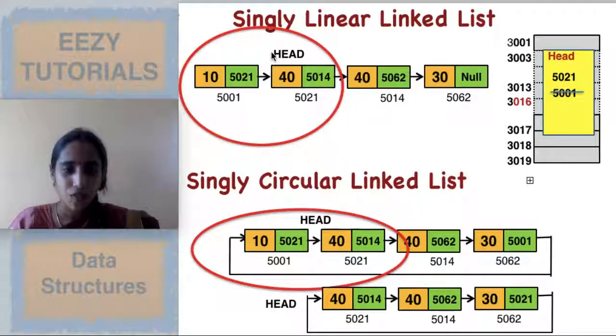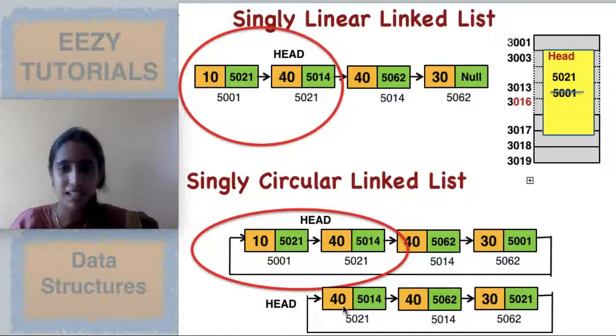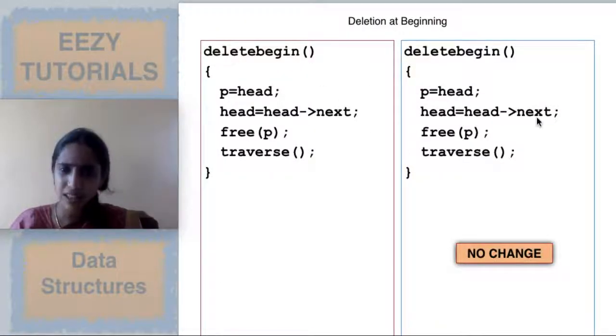As usual we will compare singly linear linked list and circular linked list. Here we don't have any change at all. This is the code for both things, the same code.